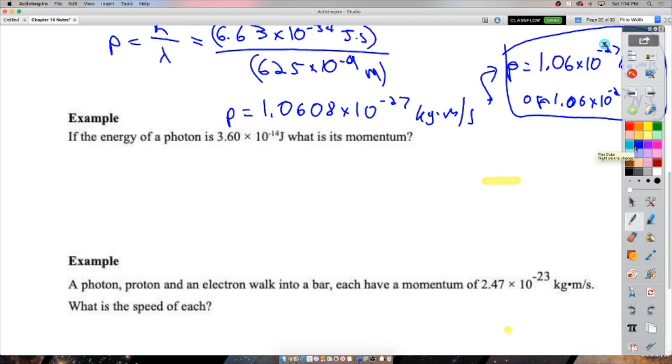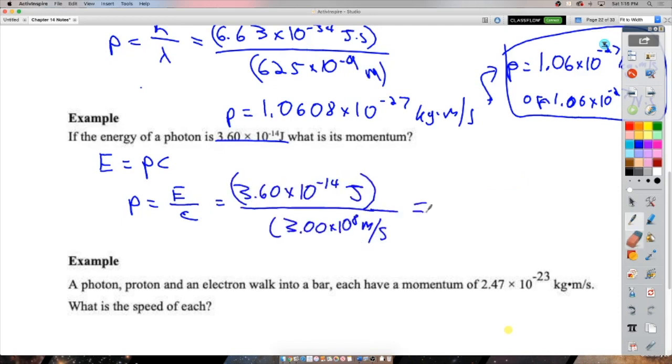So the energy of a photon is 3.6 times 10 to the negative 14 joules, what is its momentum? You could figure out its wavelength, take the momentum, plug it into here and solve for lambda. Or again, this is also an equation you have. These equations are easy to turn into each other. This just saves us a step. So rearranging and plugging in, actually pretty straightforward. That's what I got. New equation, let's do a unit check.